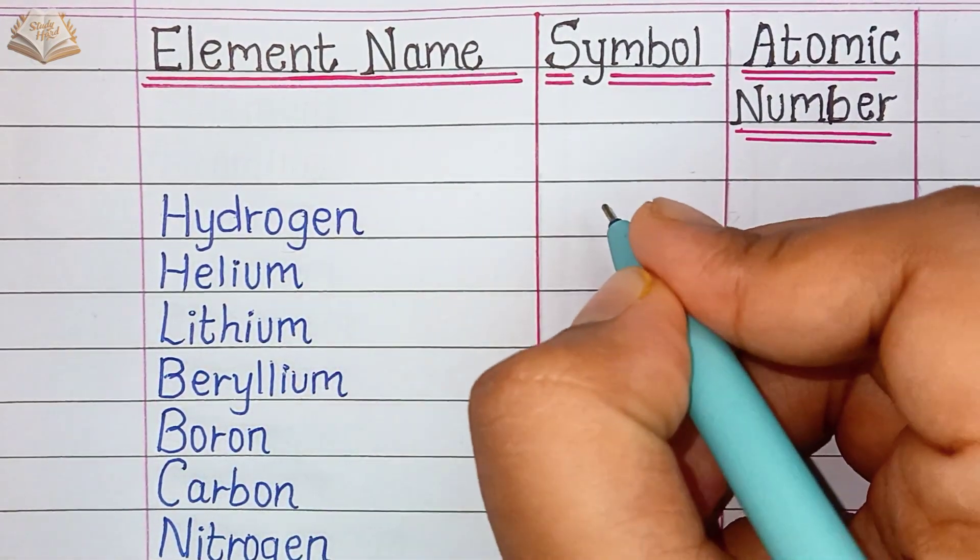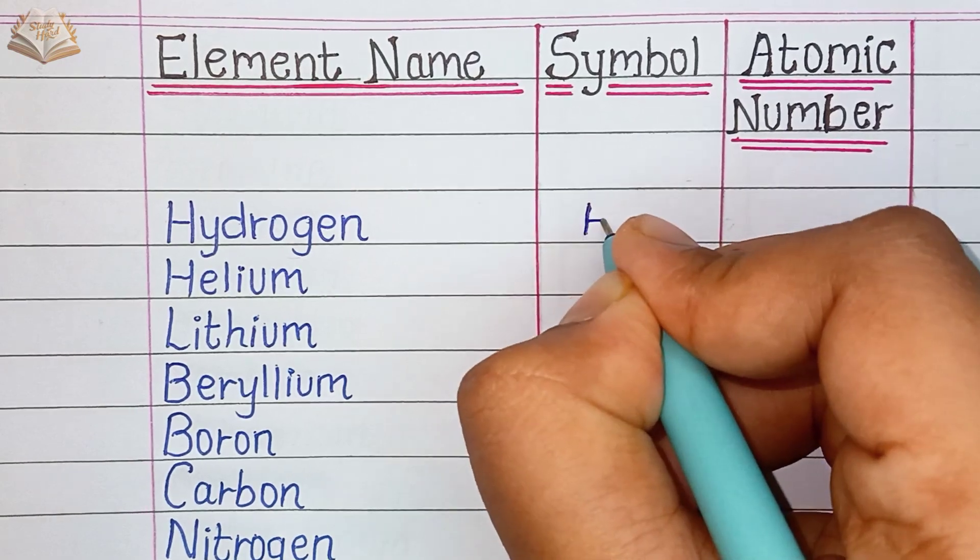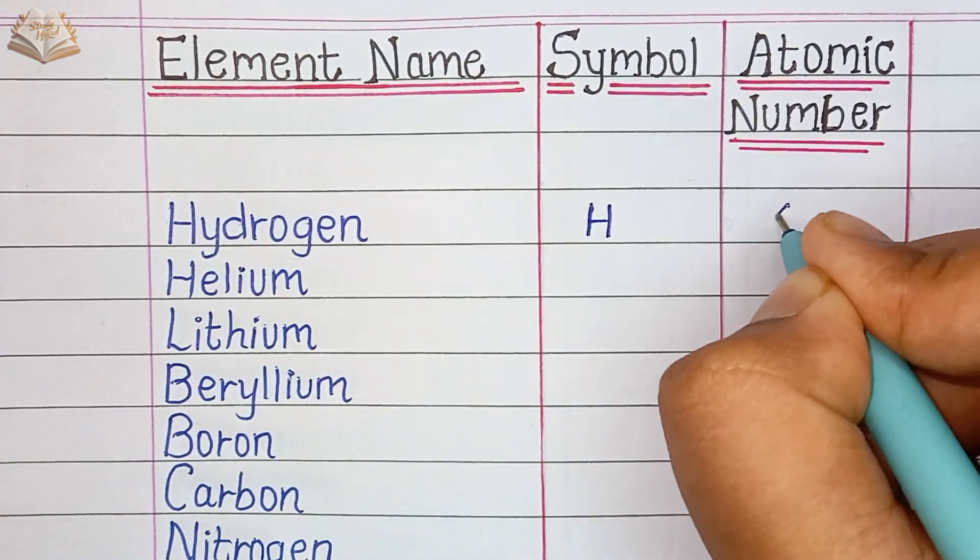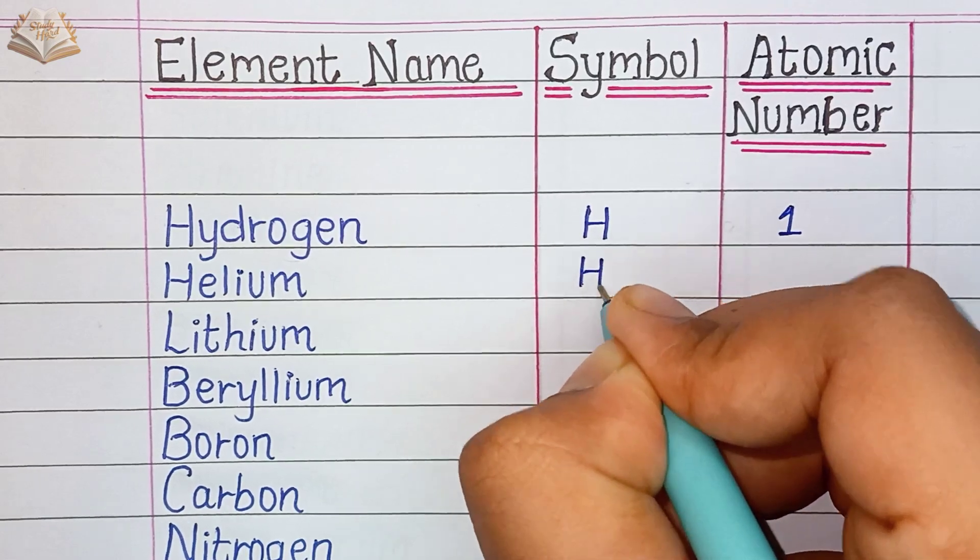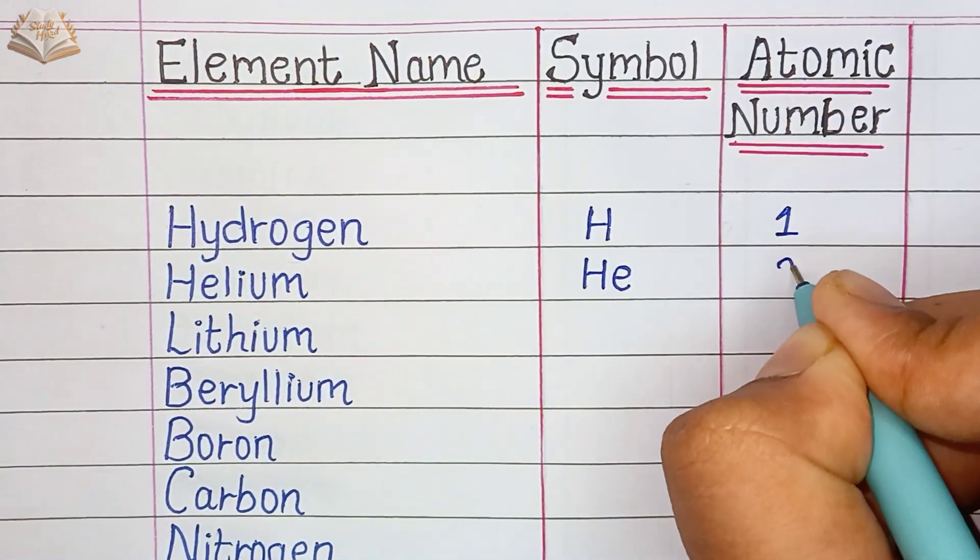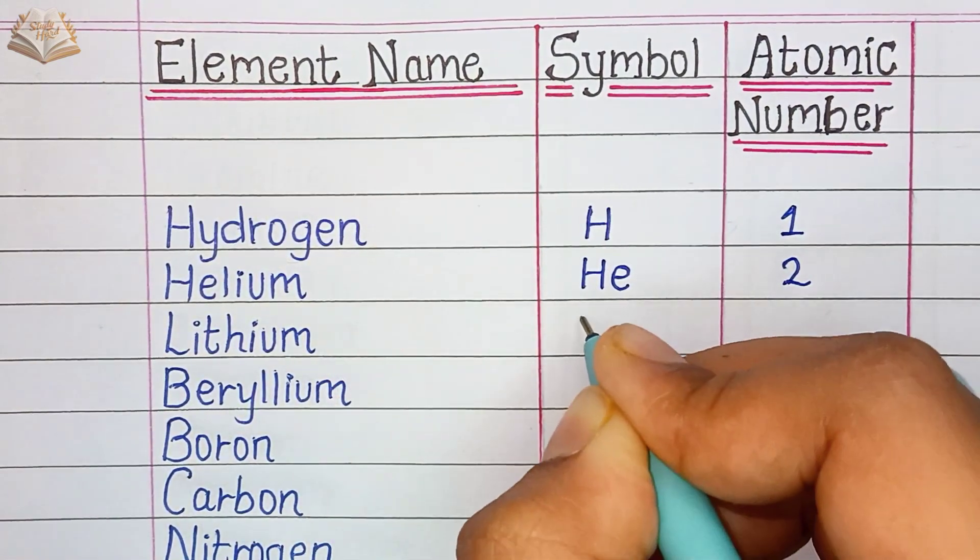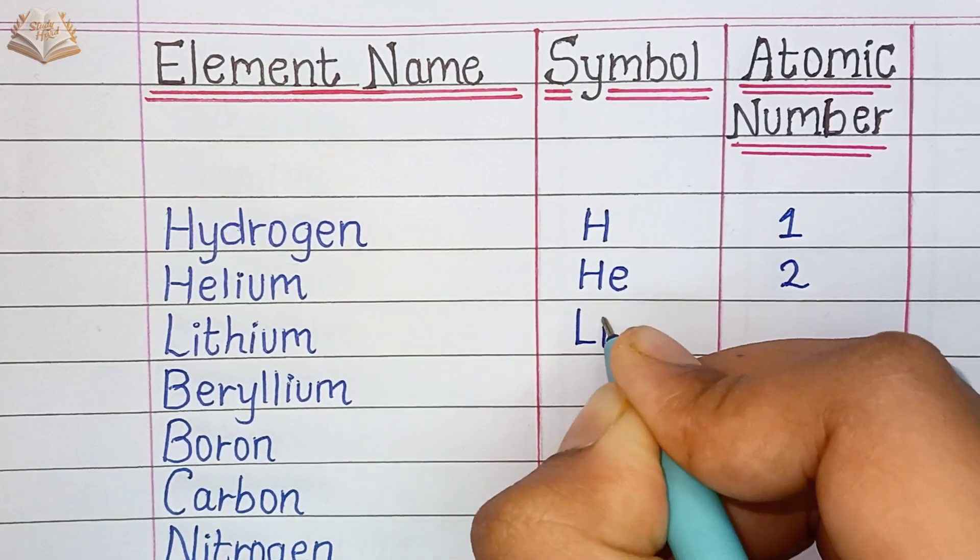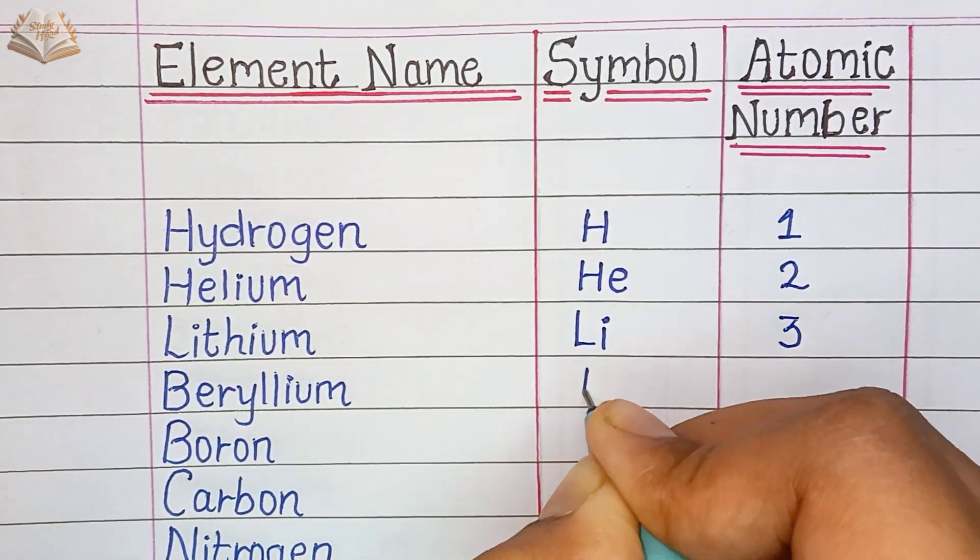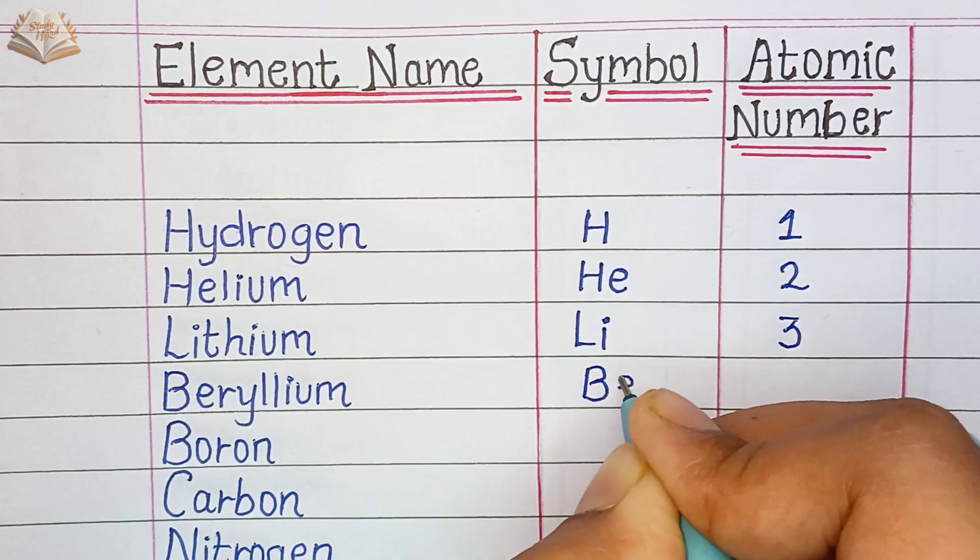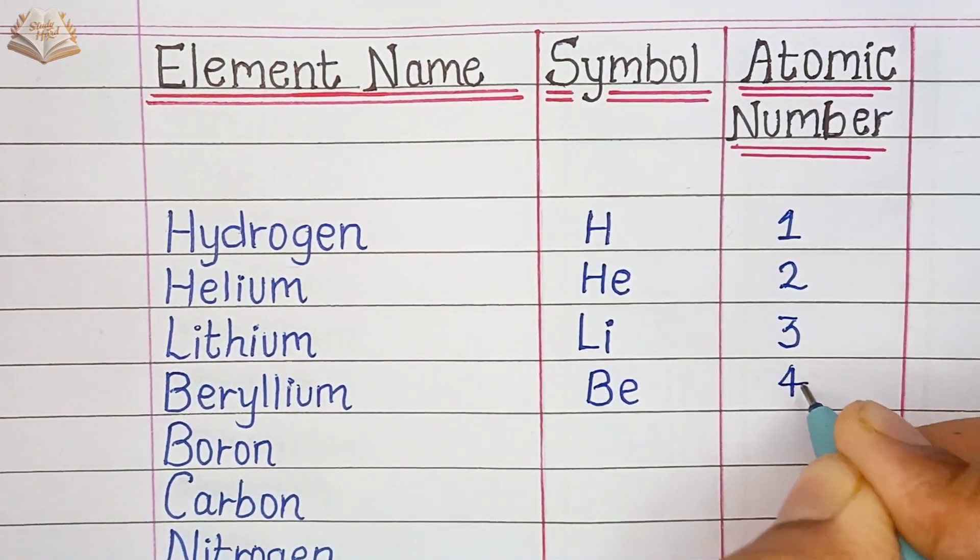So let's start. Hydrogen, symbol is H, atomic number 1. Helium, symbol HE, atomic number 2. Lithium, symbol Li, atomic number 3. Beryllium, symbol BE, atomic number 4.